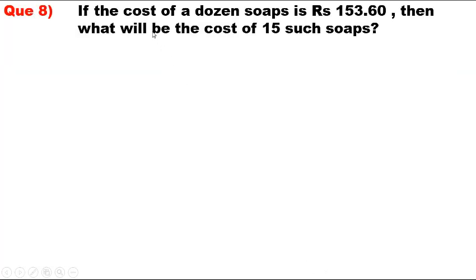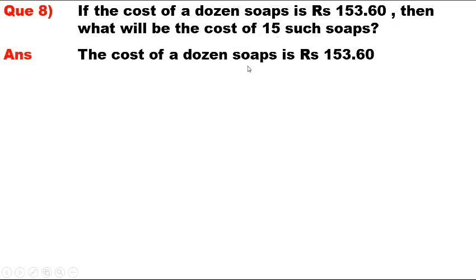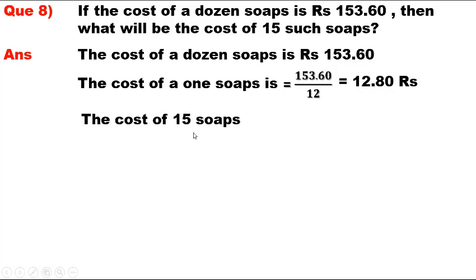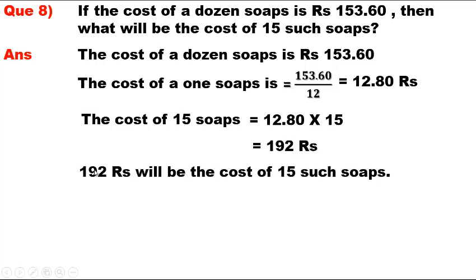Question 8. If the cost of a dozen soaps is Rs. 153.60, then what will be the cost of 15 such soaps? Answer. The cost of a dozen soaps is Rs. 153.60. Therefore, cost of one soap = Rs. 153.60 / 12 = Rs. 12.80. The cost of 15 such soaps?